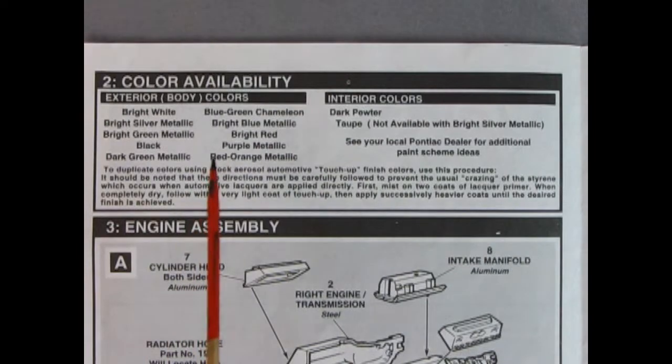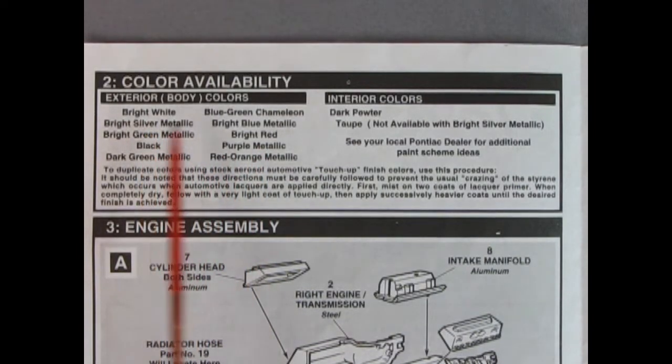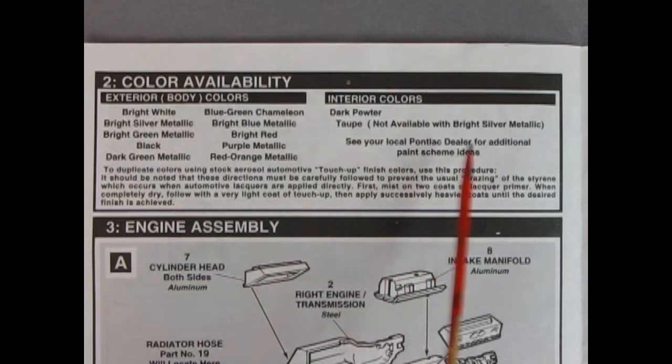Panel two shows you a color availability chart and the car had such colors as bright white, blue green chameleon, red orange metallic and here's the interior colors as well. It does say you could use automotive touch-up paint to get the right colors.